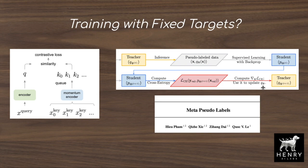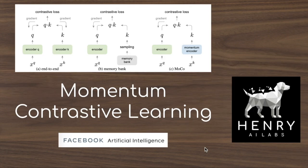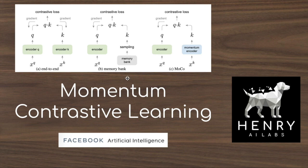Thanks for watching this explanation of momentum contrastive learning. Hopefully you can take away the difference between how the momentum encoder encodes keys compared to end-to-end gradients through the key encoder, how the momentum encoder avoids inconsistent keys from a memory bank approach, and how the queue provides more consistent, updated key representations. Please subscribe to Henry AI Labs for more deep learning and AI videos.